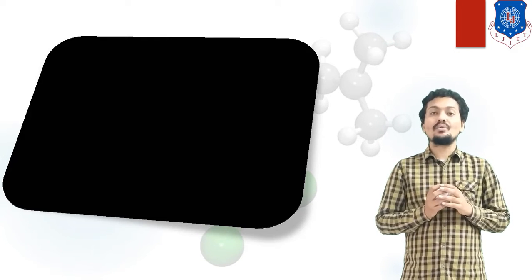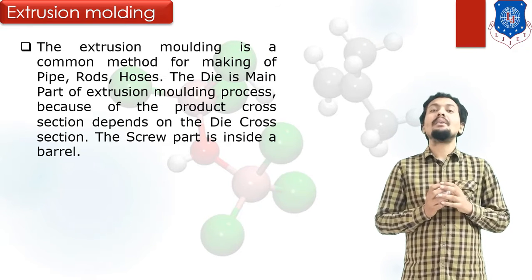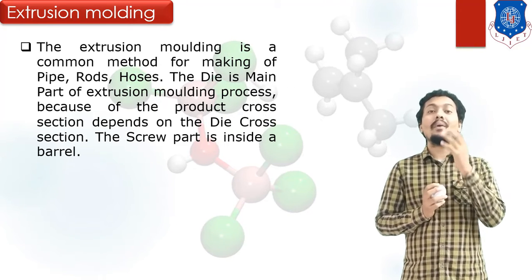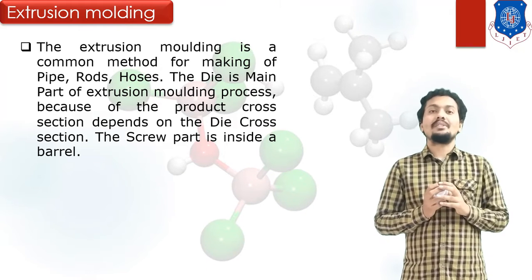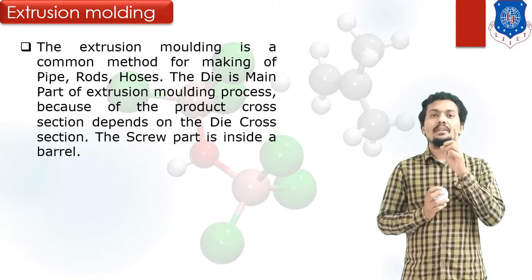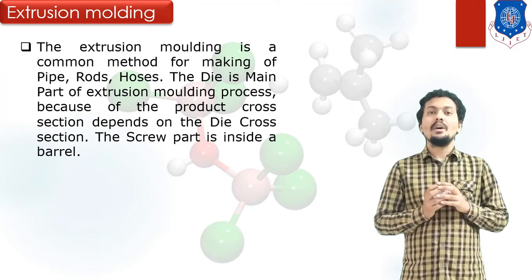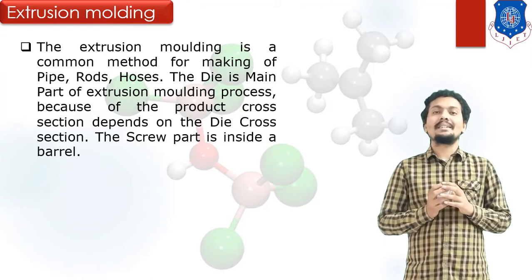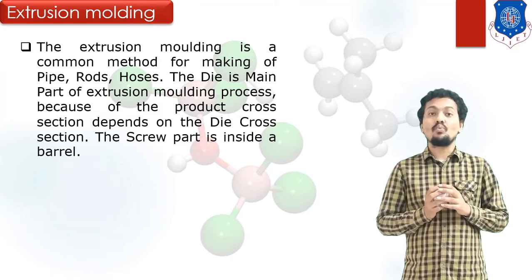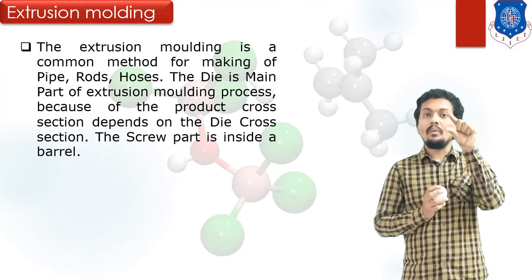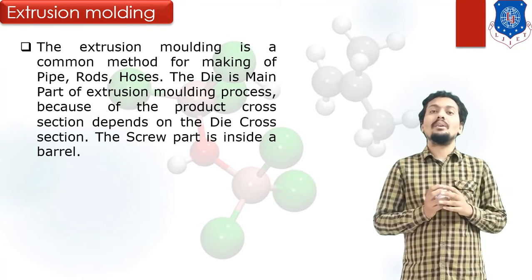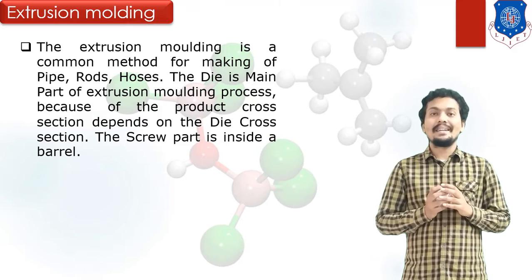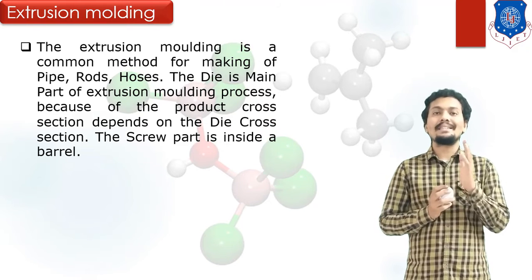Next, let us discuss Extrusion Molding. In Extrusion Molding, the process is very similar to what we discussed in the shaping and forming processes chapter. In Extrusion, your purpose is to give shape to your material through a die. A simple example is toothpaste — when we apply force to the tube, the paste comes out from the nozzle. This is the concept of Extrusion, and it is used in various plastic molding processes.